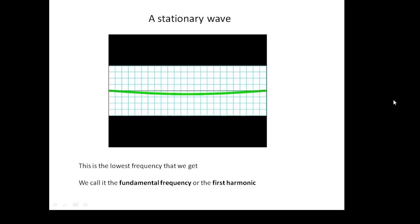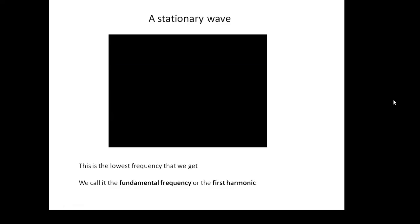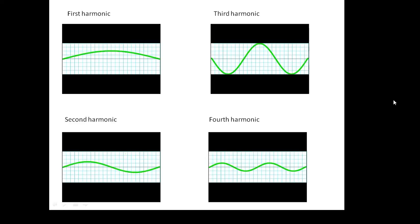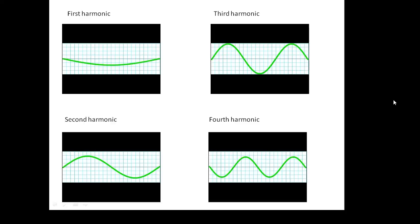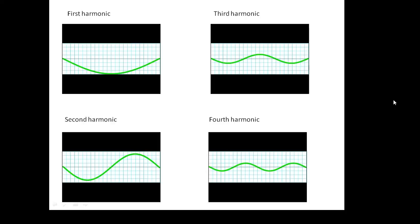The string goes up and down — this is called the fundamental frequency or the first harmonic, and it's a single loop. We've got the first harmonic which is a single loop, the second harmonic which is two loops, the third harmonic which is three loops, and the fourth harmonic which is four loops. These are the stationary wave patterns — the special kind of wave we get on a guitar string.